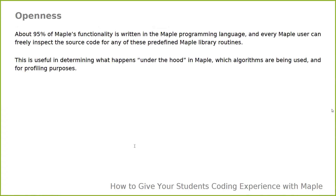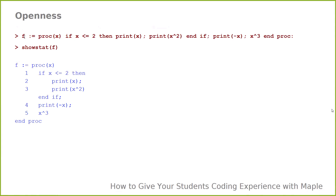About 95% of Maple's functionality is written in the Maple programming language, meaning every Maple user can freely inspect source code for many predefined Maple library routines. This is useful for understanding what's happening under the hood and which algorithms are being used. For example, using the 'showstat' command on a Maple procedure echoes back the procedure with line numbers. You can use this with anything that is not a built-in kernel function — roughly 95% of the language — to see all the source code for any Maple package command.